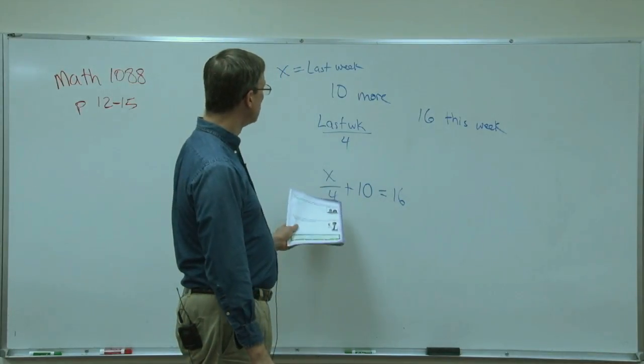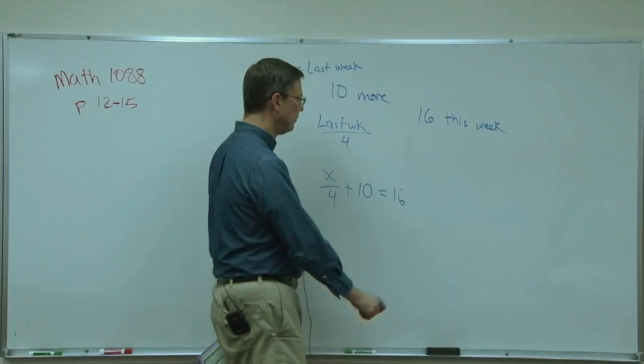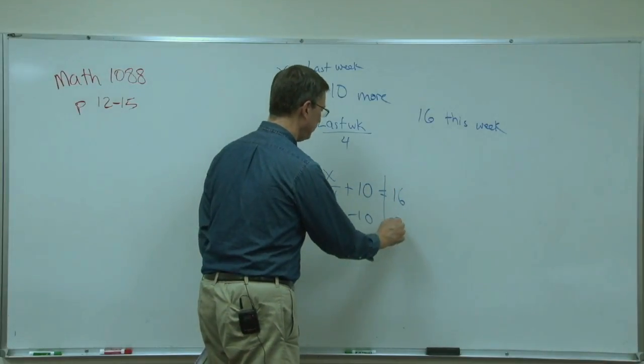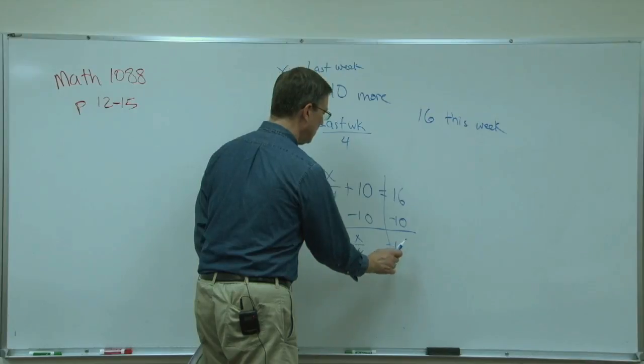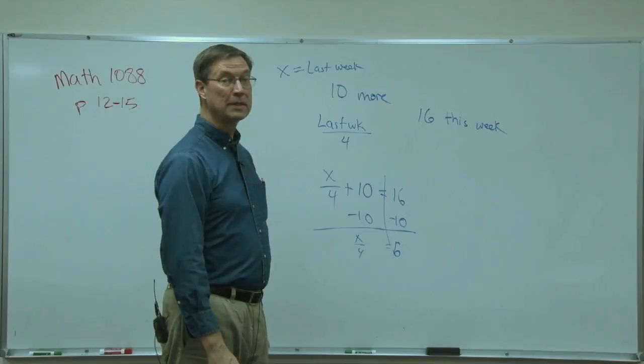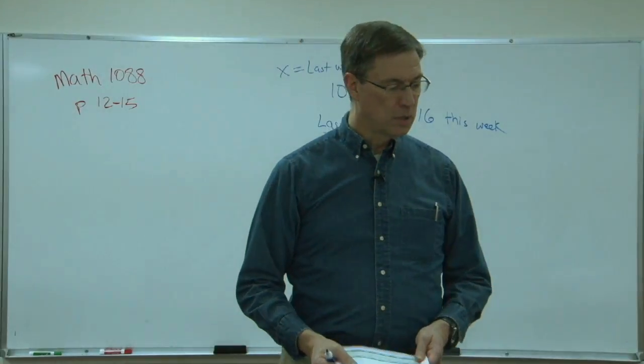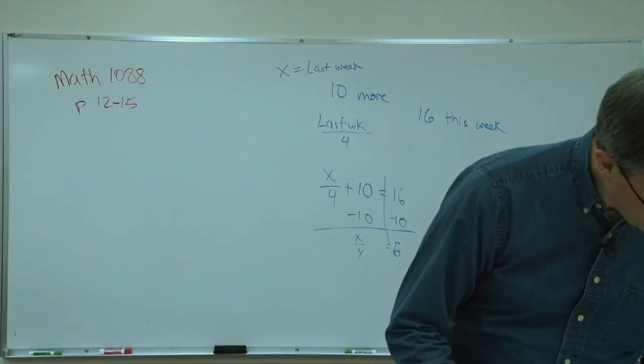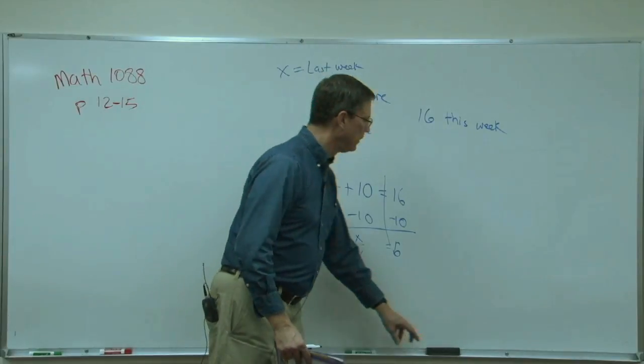So now to solve this problem, we're going to subtract 10 from both sides. So I'll have X over four equals six. And then to solve for X, you will multiply both sides by four. And that should give you the correct answer. And I'm just double checking page 14. Yes. That would give you the correct answer. Alright. I'll let you finish that one.